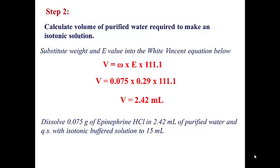This gives you an isotonic solution. You then add sufficient quantities of your isotonic buffer solution — in this example, that would be 12.58 milliliters. Because both the initial solution of epinephrine hydrochloride dissolved in 2.42 milliliters of purified water is isotonic, and the buffer is also isotonic, the combination will be isotonic.